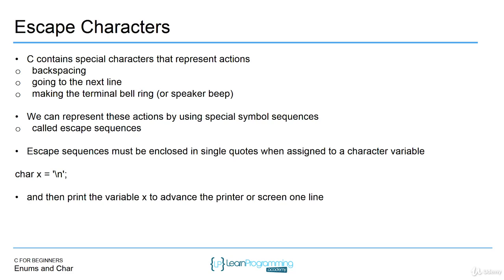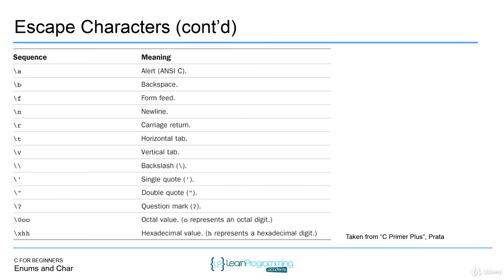Char x represents this character — if you print variable x, it would just advance to the next line. There are a number of different escape sequences. Here's a table from the C Primer Plus book showing all the escape characters that represent actions: backslash n is a new line, backslash r is a carriage return, backslash v is a vertical tab, and backslash t is a horizontal tab. Let's see some examples of this, along with enum examples inside our code blocks editor.